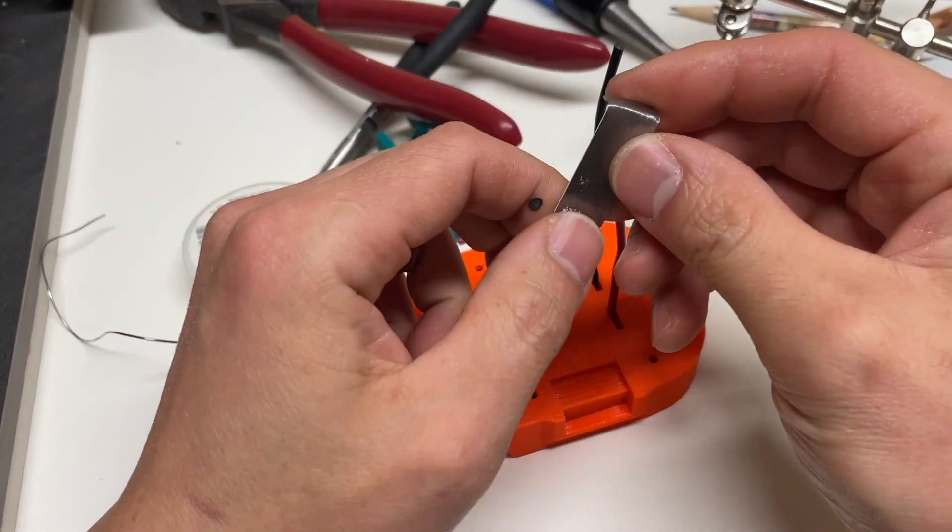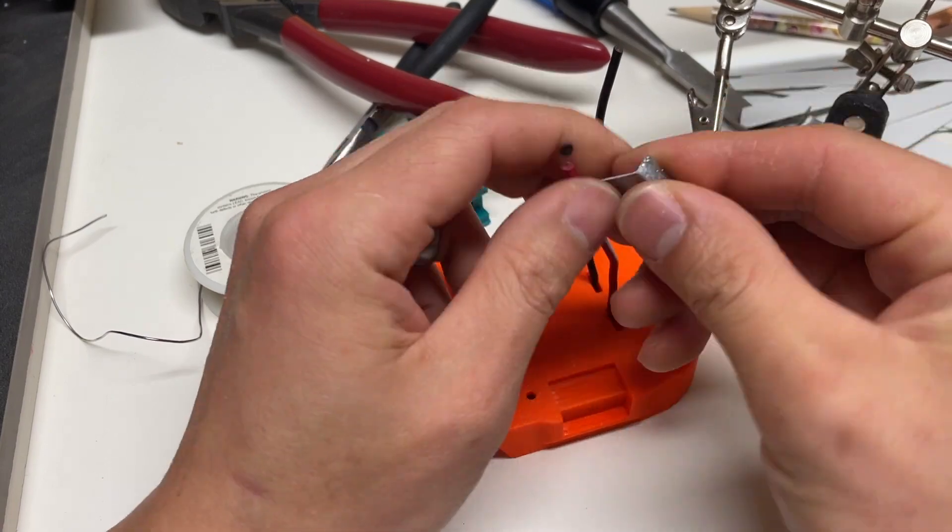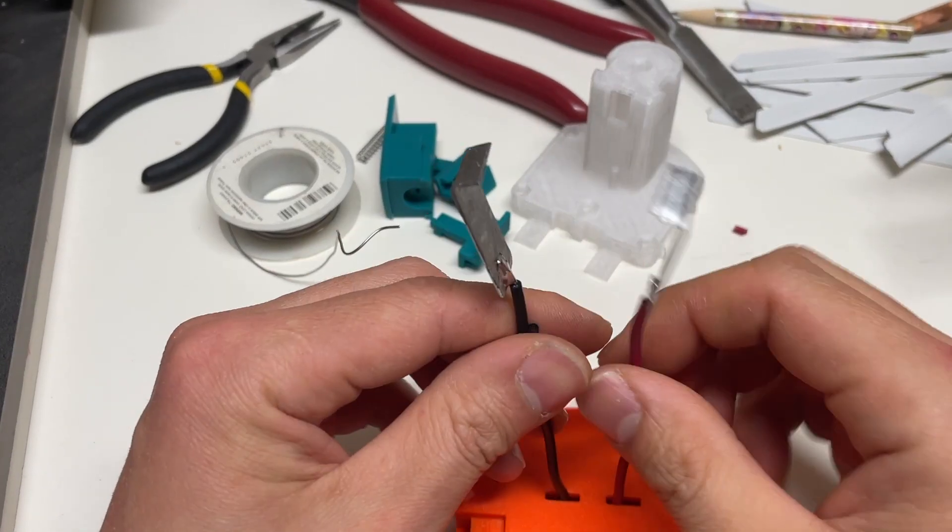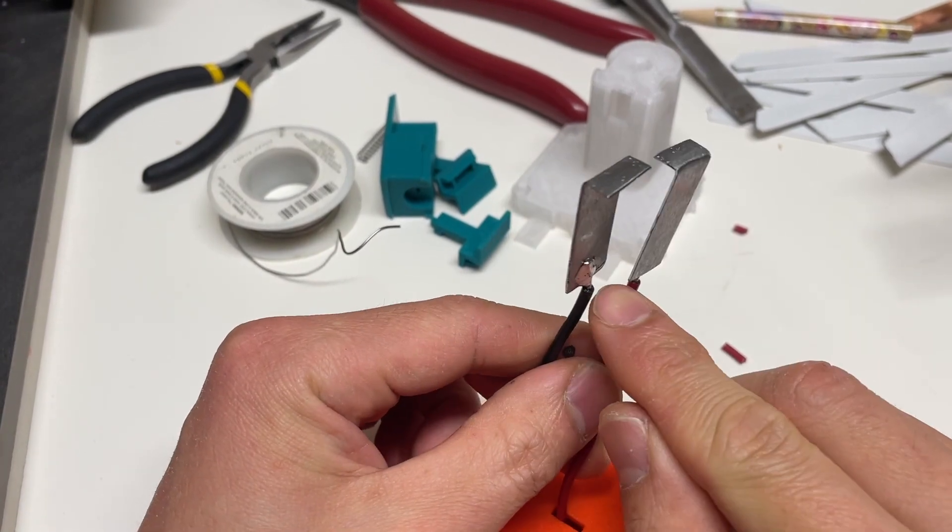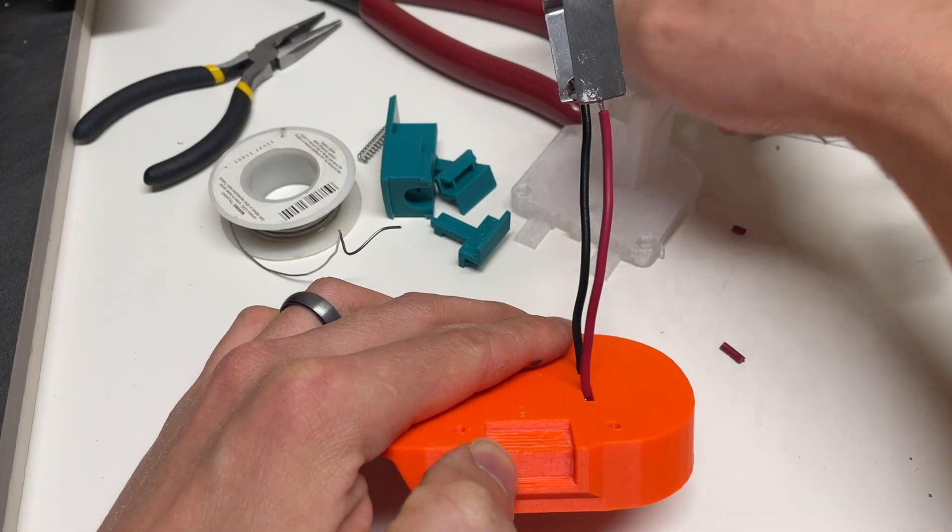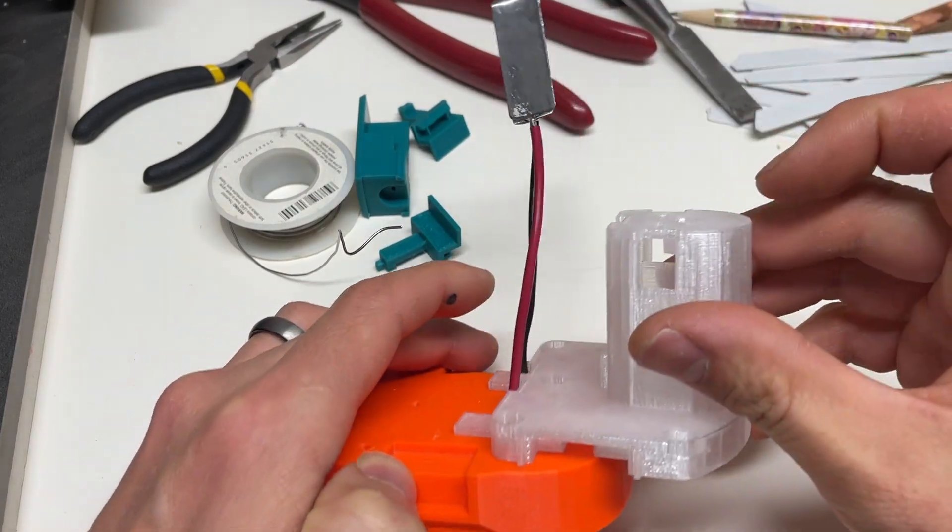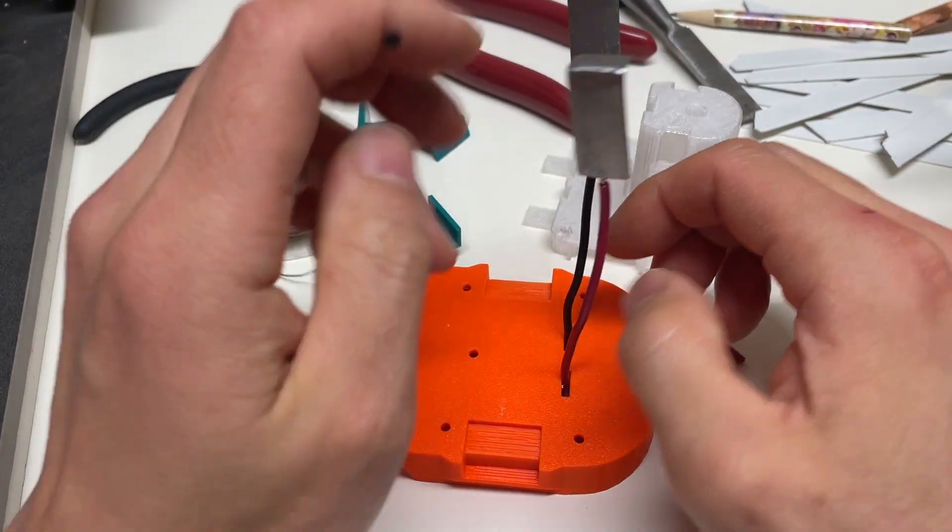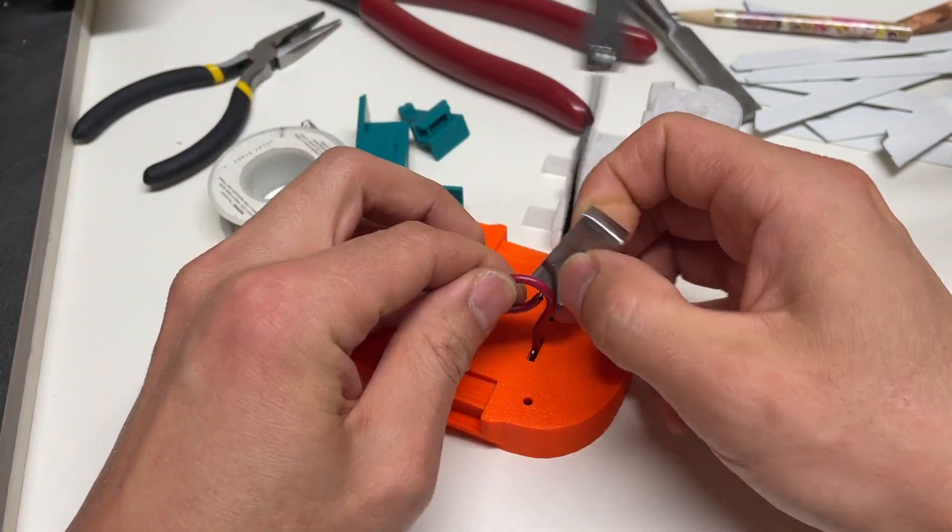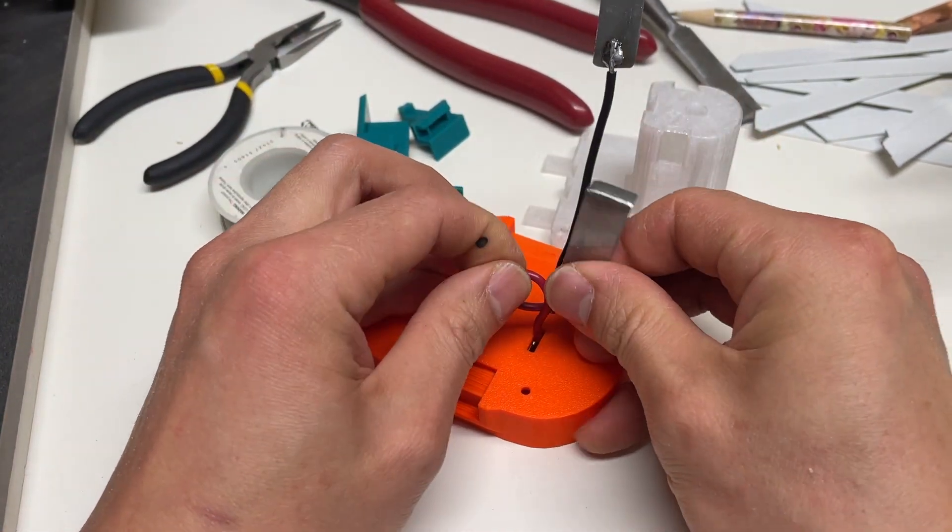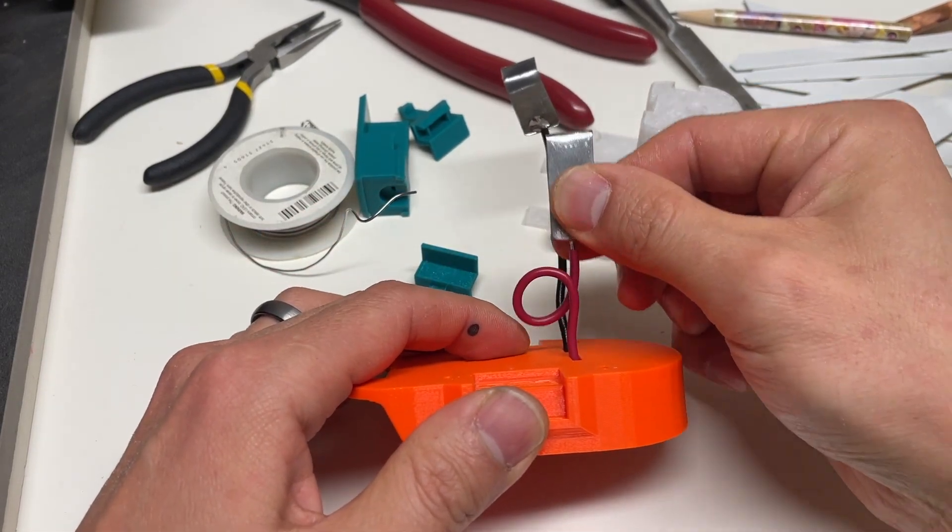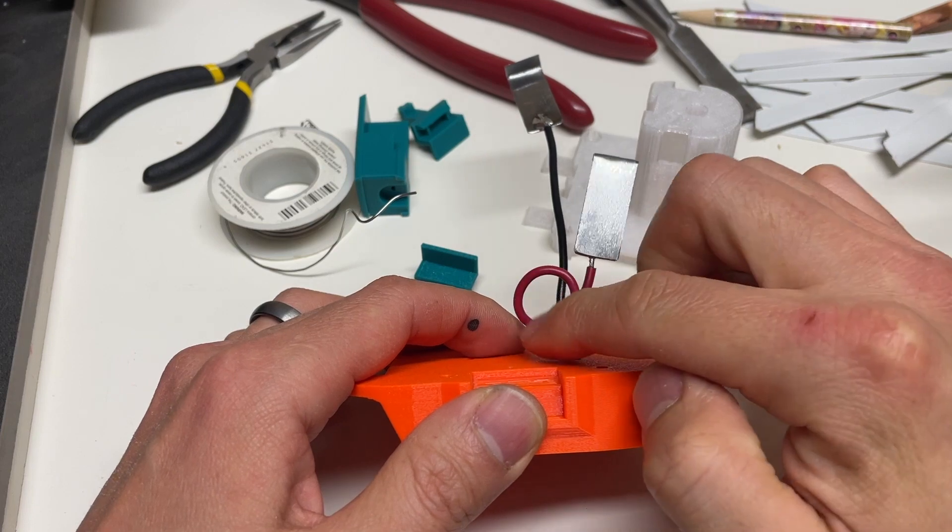So now we could go ahead and solder the Ryobi side. Alright so both sides are soldered on and the wires may look long at this point. And it actually is but I did that on purpose because what I like to do is kind of loop it around and then it gives me the ability to go up and down.